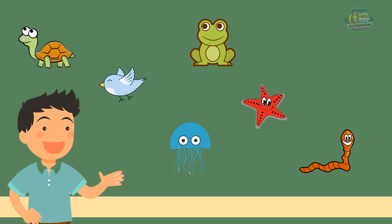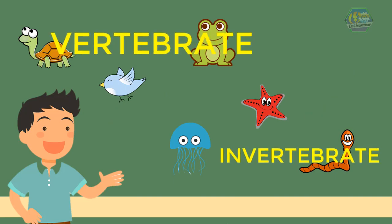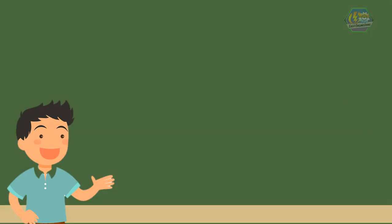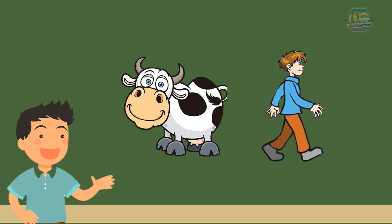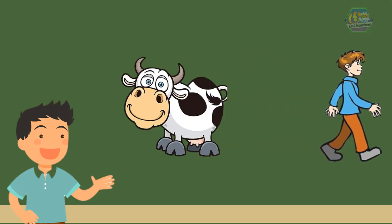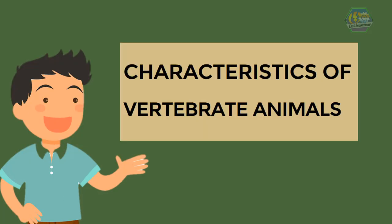If we group animals, there are two largest groups: the vertebrates and invertebrates. For a fun fact about animals, did you know that cows have best friends, and they become stressed if they are separated? So what are the characteristics of vertebrate animals?